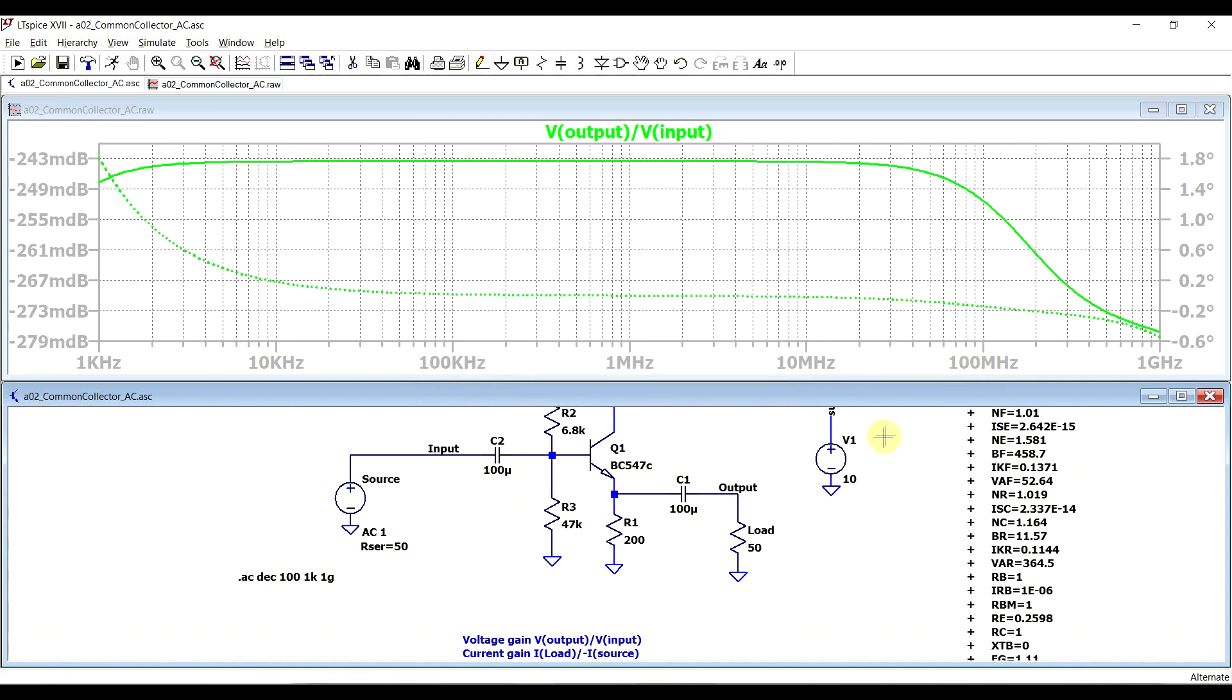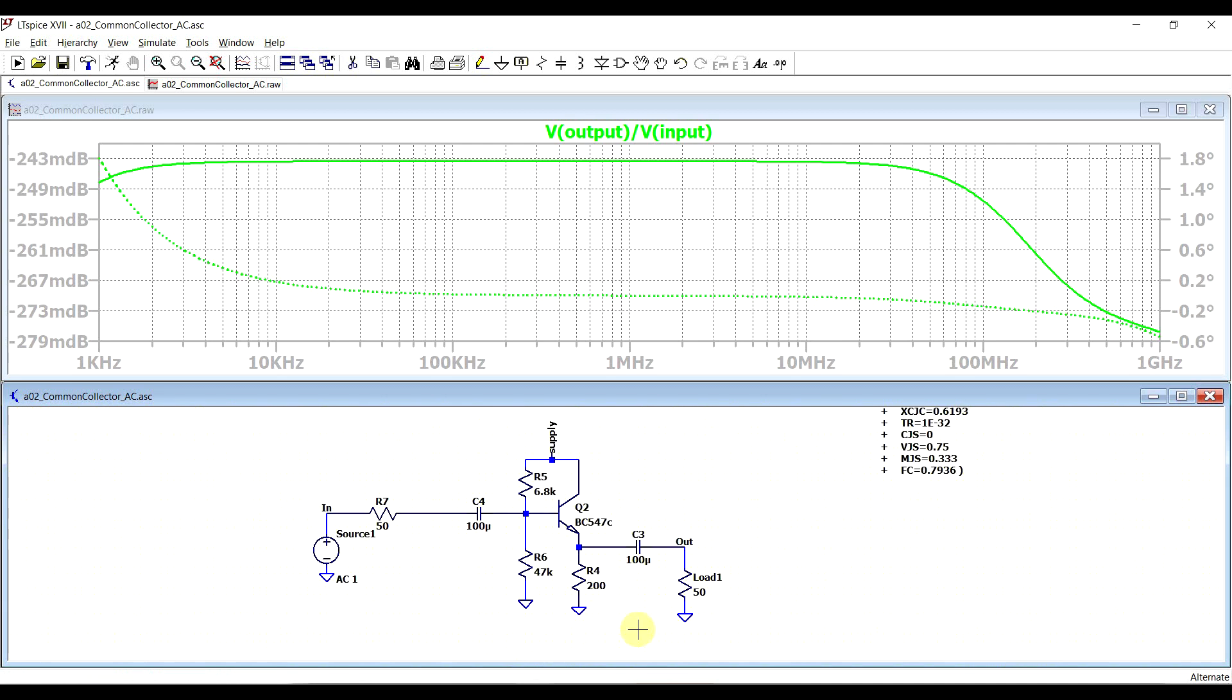And this is somewhat understandable. The base emitter junction is working like a diode, so whatever is on the input is also on the output. Now, if we consider the input signal to be the signal before the signal source impedance.